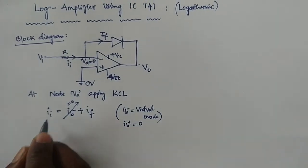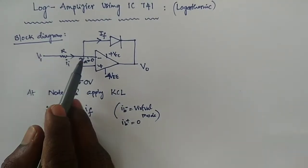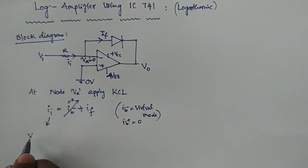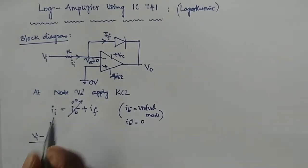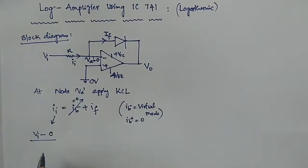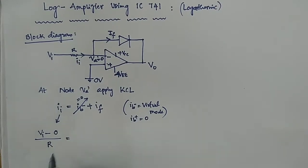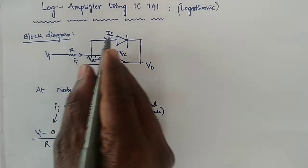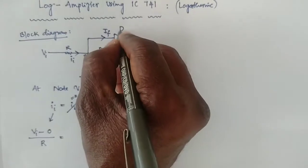The input current II can be represented as (starting voltage minus ending voltage) divided by resistance. That is (VI minus 0) divided by R, since VA equals 0. This equals IF, because this is an actual diode.